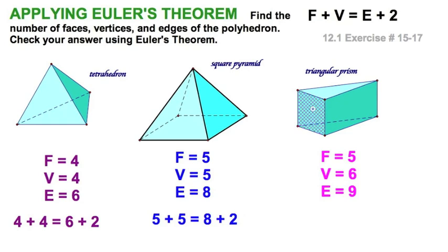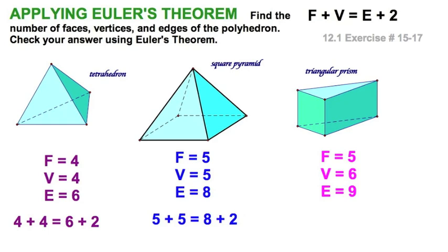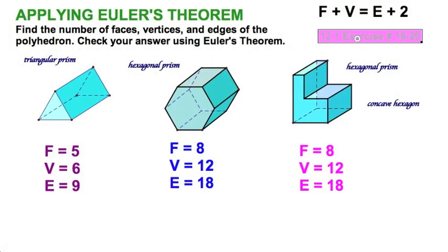This shape is a triangular prism, which means it's got a triangular base here and a triangular base here — that's two of the five faces — plus three rectangular faces, one of which is in the background. So three rectangular faces and two triangular faces give a total of five faces. Vertices: three down low and three up high, that's six. Edges: three per triangle plus three connecting the vertices gives nine total. Five plus six equals nine plus two.